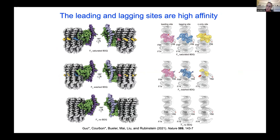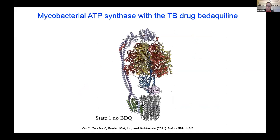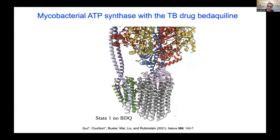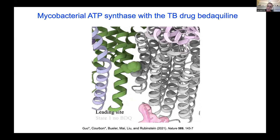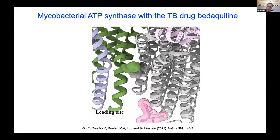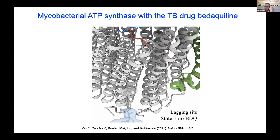Our model for how betaquiline inhibits the mycobacterial ATP synthase is that the enzyme undergoes a massive conformational change to produce binding sites at the interfaces of the stator subunit and the C ring. Amazingly, that conformational change produces two equivalent binding sites — one on each side — that are both optimal for the one drug molecule, corresponding to exactly the right amount of rotation.